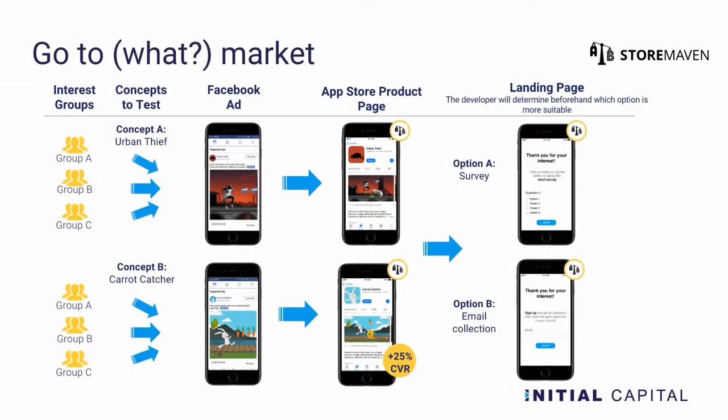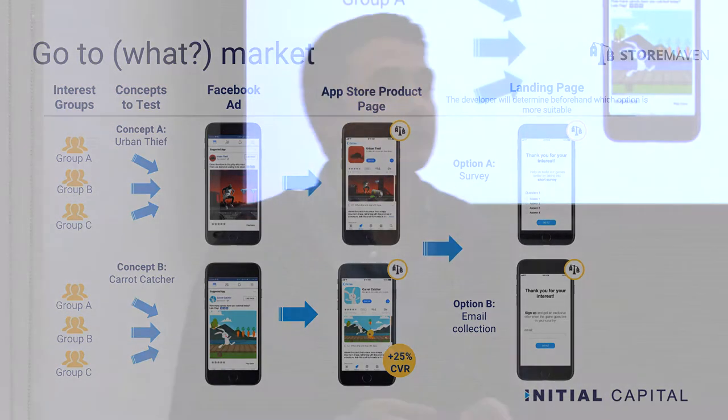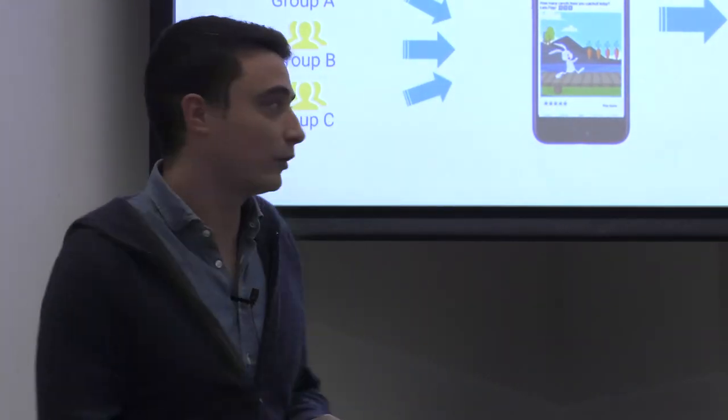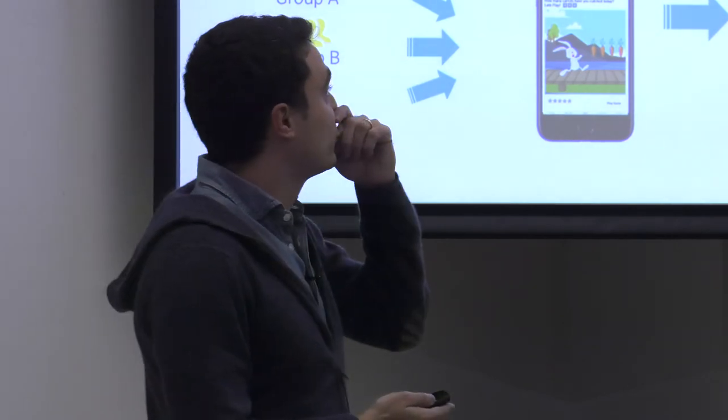Before doing that, the most important thing as you plan your launch is to really understand the market you're going for. That will help inform what beta community you target, what influencers you work with, and also when you discuss your game with app stores, you already know what you're doing and can use this information to convince them that this is going to be a successful game.